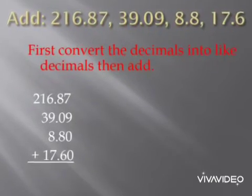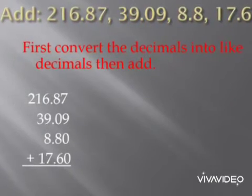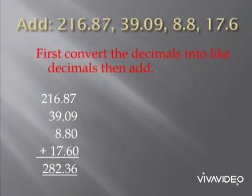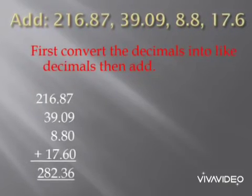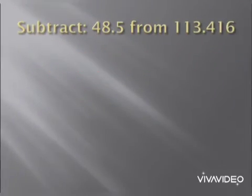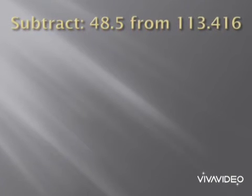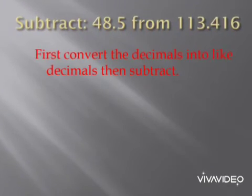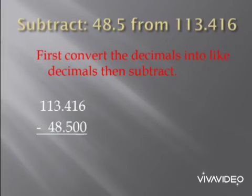Then add normally and we get 282.36 as their sum. Next, subtract 48.5 from 113.416. First, convert the decimals into like decimals, then subtract. Arrange the numbers one below the other so that the decimal points of both numbers are in the same column.